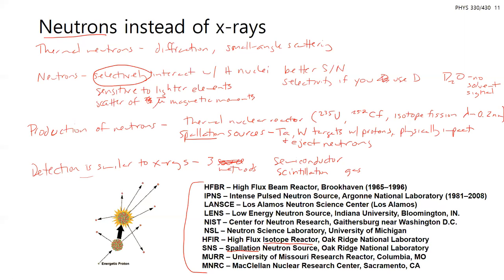Neutrons also have the challenge in that they're neutral, so there are some more specialized considerations with detection — going from a neutral charge to something that can be detected. The energy transfer: an x-ray will ionize those neutral gases, but for neutrons there has to be some energy transfer that might not be as charge-based.